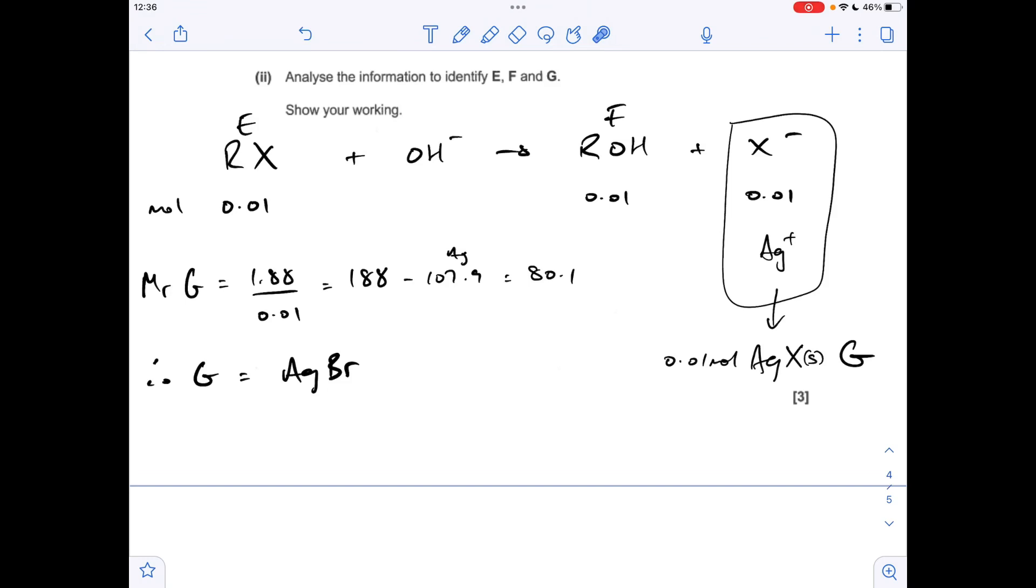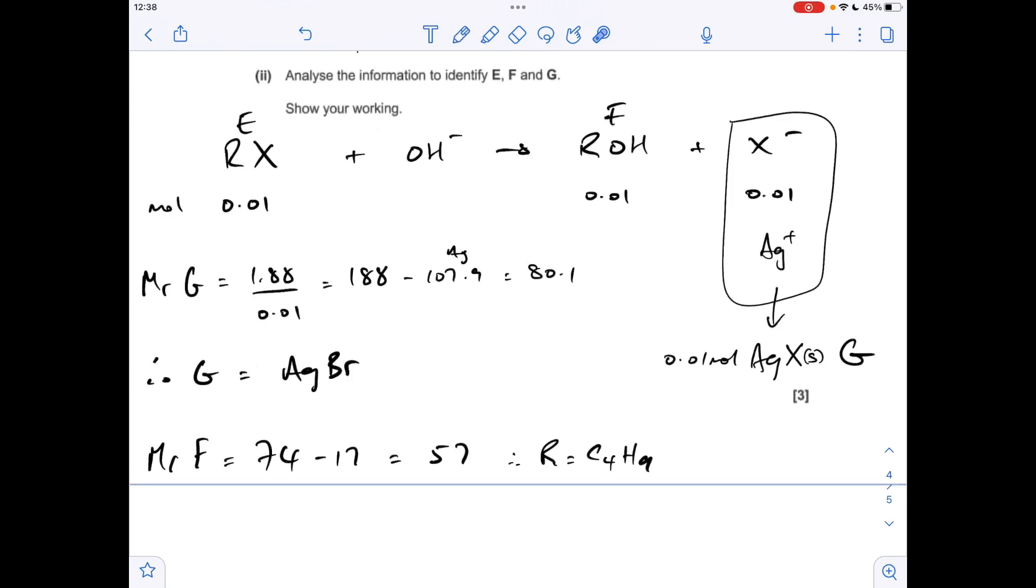So if we deal with F next, remember this is the alcohol that's formed, where we were told the MR of this was 74. Subtract the MR of the OH group, which is 17. That leaves us with 57 for the MR of the carbons and hydrogens. That means the R group is C4H9.